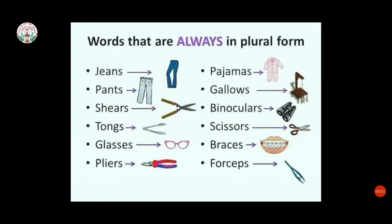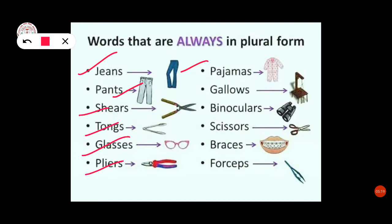Here in the picture you can see words that are always in plural form. Like jeans — we never say jean; we always say jeans. We can't say pant; we always say pants. Other examples here are: shears, tongs, glasses, pliers, pajamas, gallows, binoculars, scissors, braces, and forceps. All these are words we have to use always in plural form.